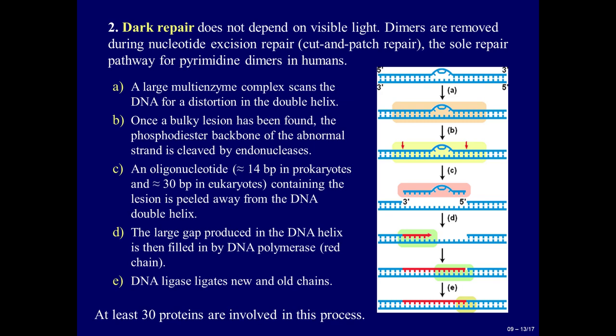Stage D: the large gap produced in the DNA helix is then filled in by DNA polymerase, indicated by the red chain in the diagram. Stage E: DNA ligase ligates the new and old chains. At least 30 proteins are involved in this process.